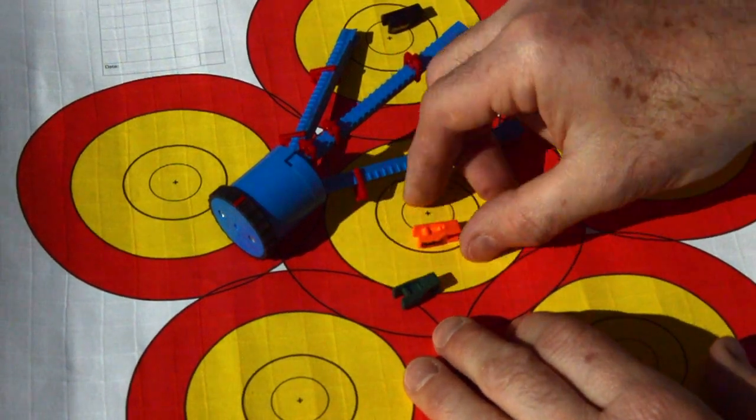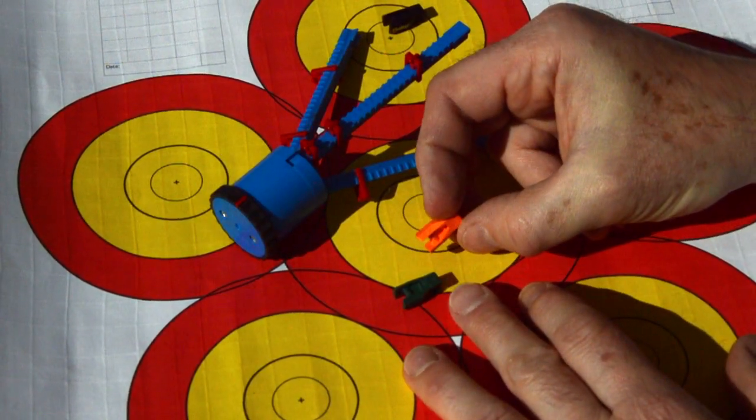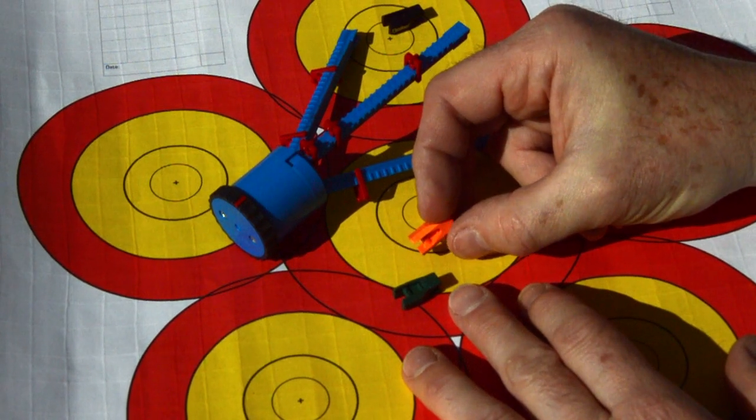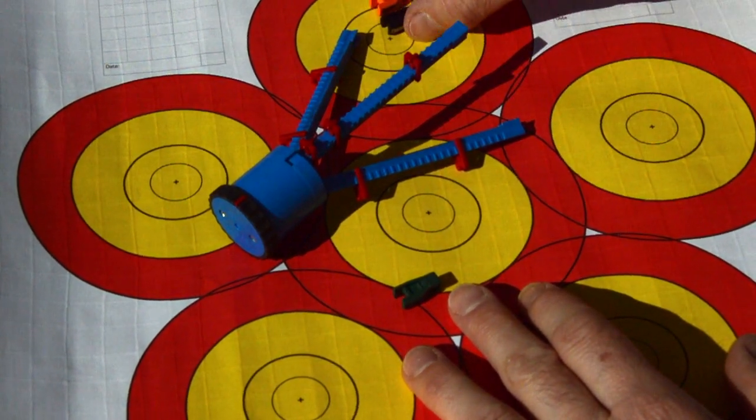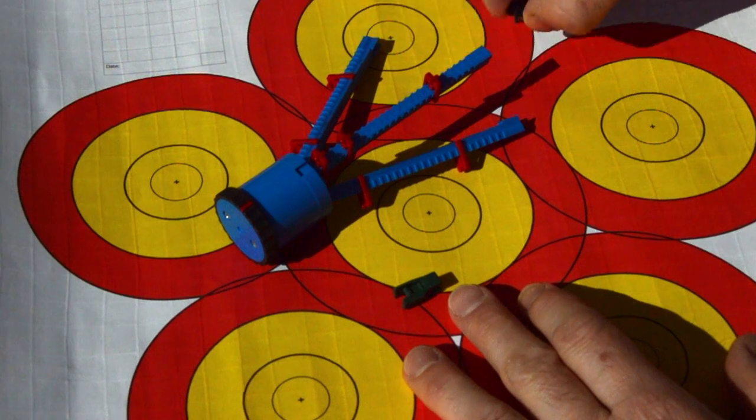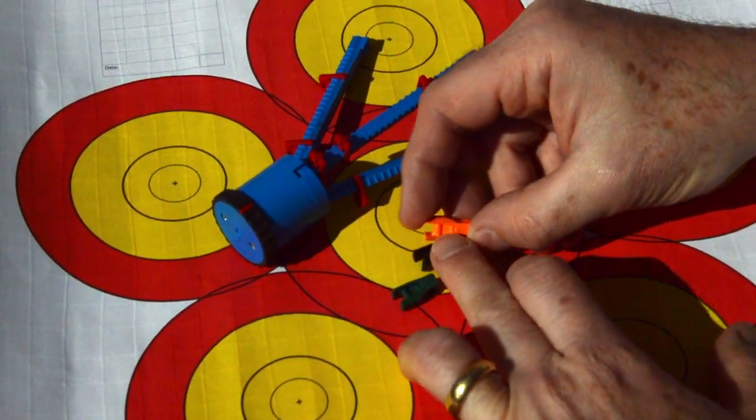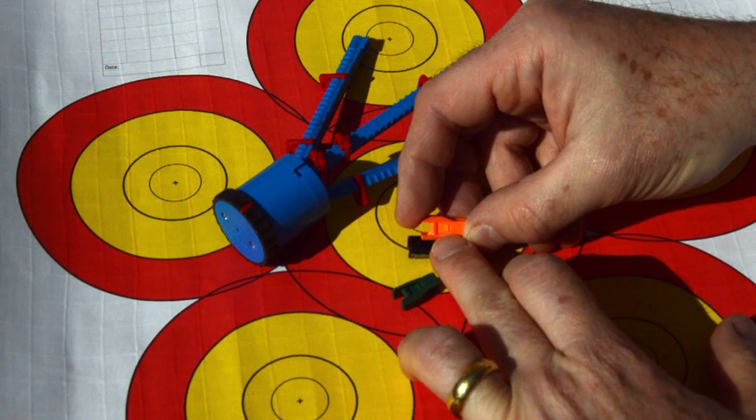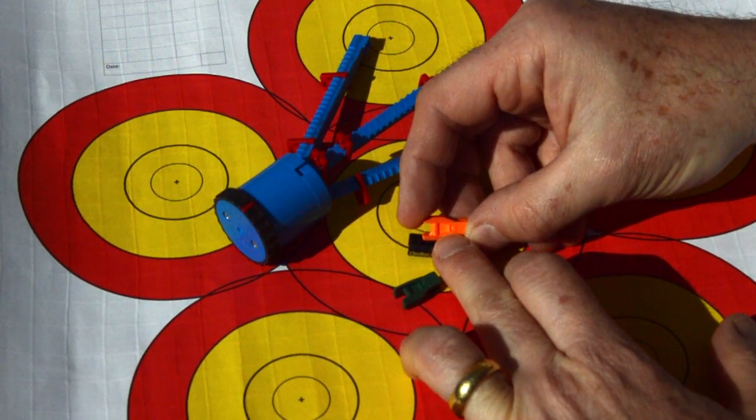We've got this orange one which is a number two which is equivalent to an Easton large groove. Both of these are asymmetric so these are to fit. I don't know if you can see that just from the angles there. They're designed to fit the asymmetric Biter nocks.